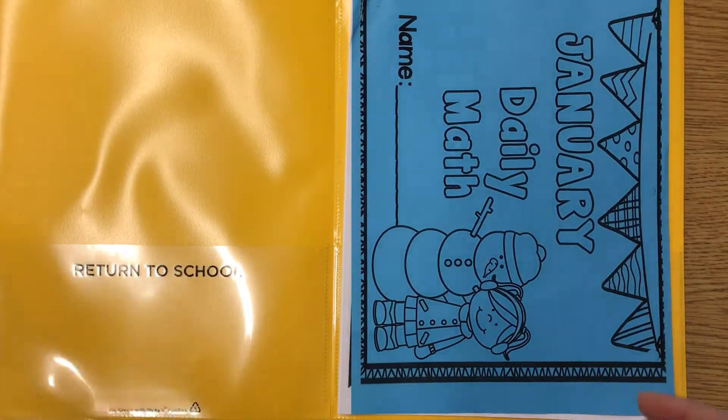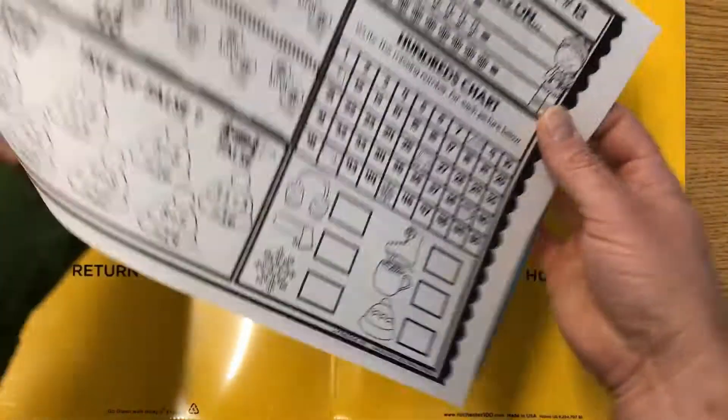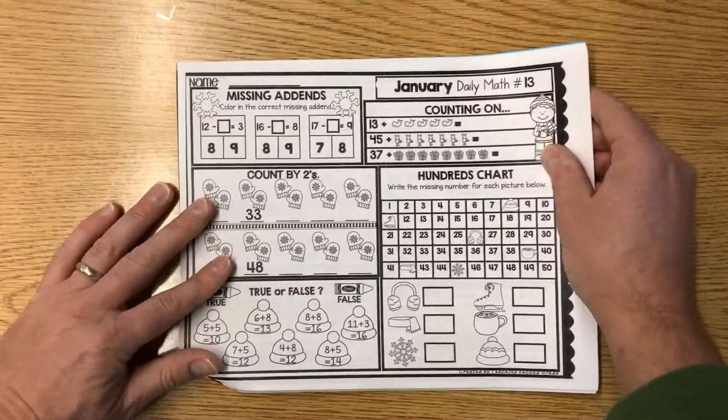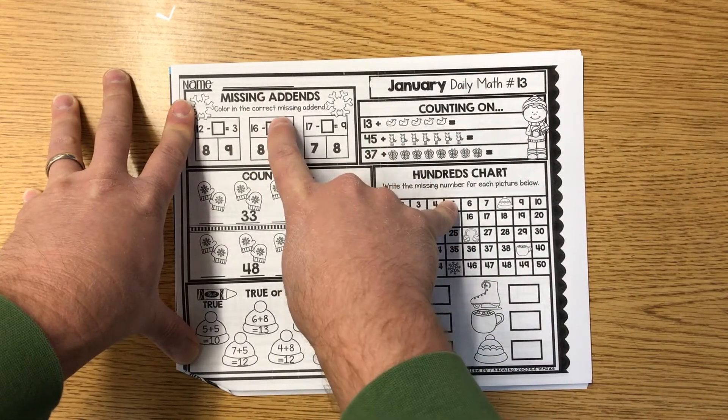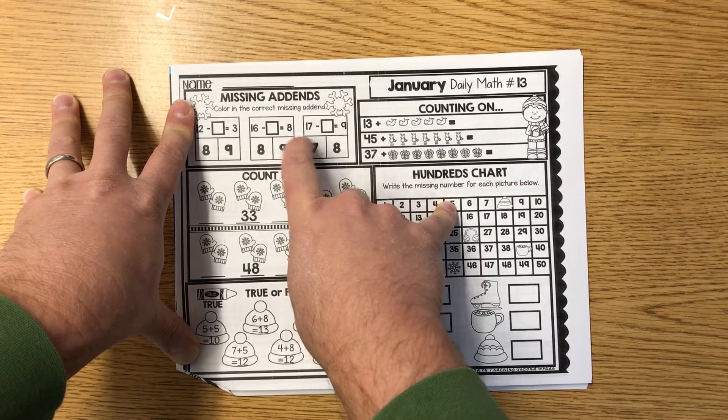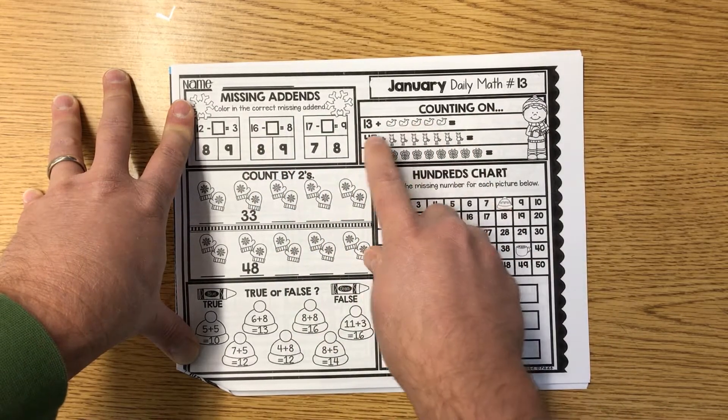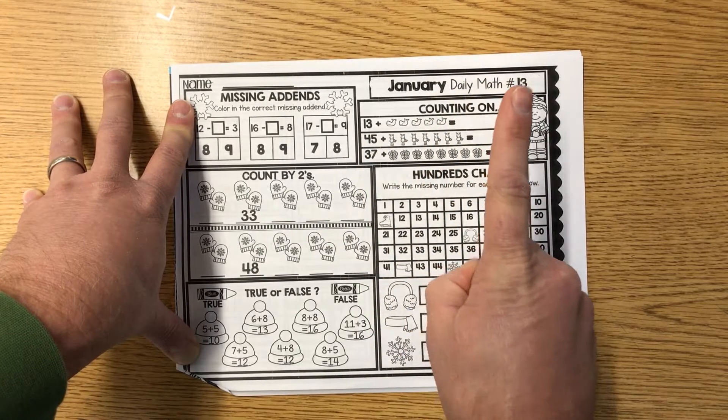And we're going to look at page 13 and page 14 today. All right, missing addends is after you write your name on the line. Code in the correct missing addend here to see where it makes sense. Counting on, you got 13 plus something, 45 plus something, 37 plus something. All these represent one for each picture.